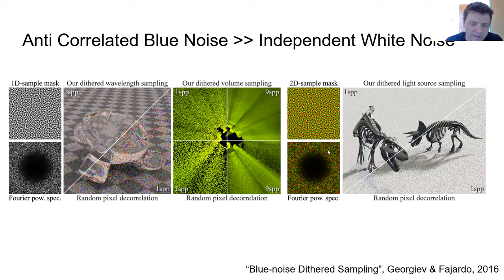white noise tends to clump and leave holes within the domain that they're sampling or within the values that they represent, where blue noise is more evenly distributed. And so this means that...